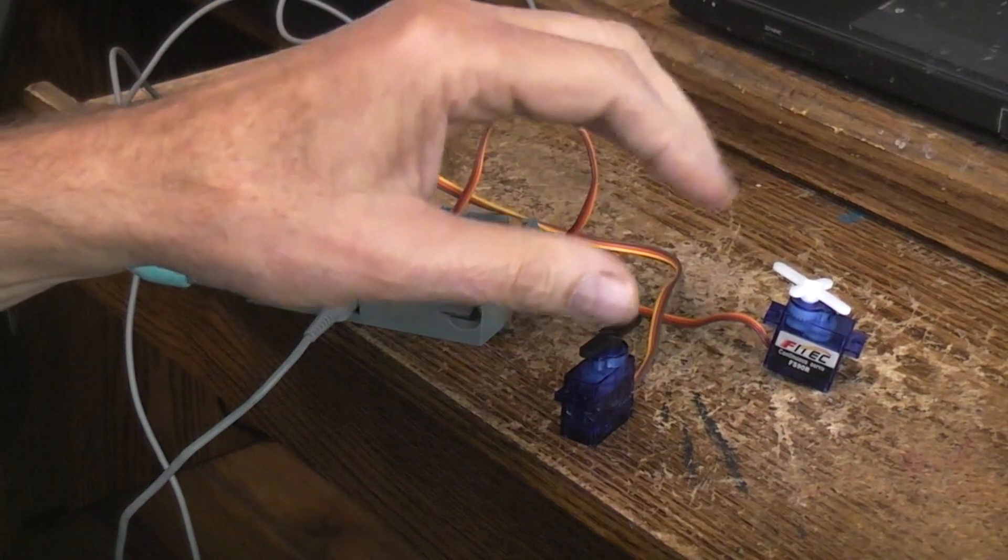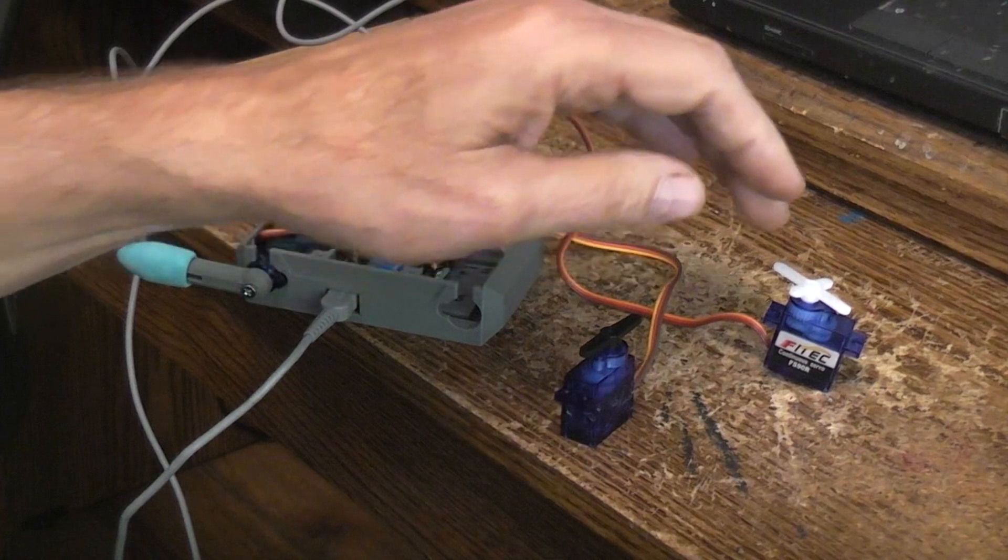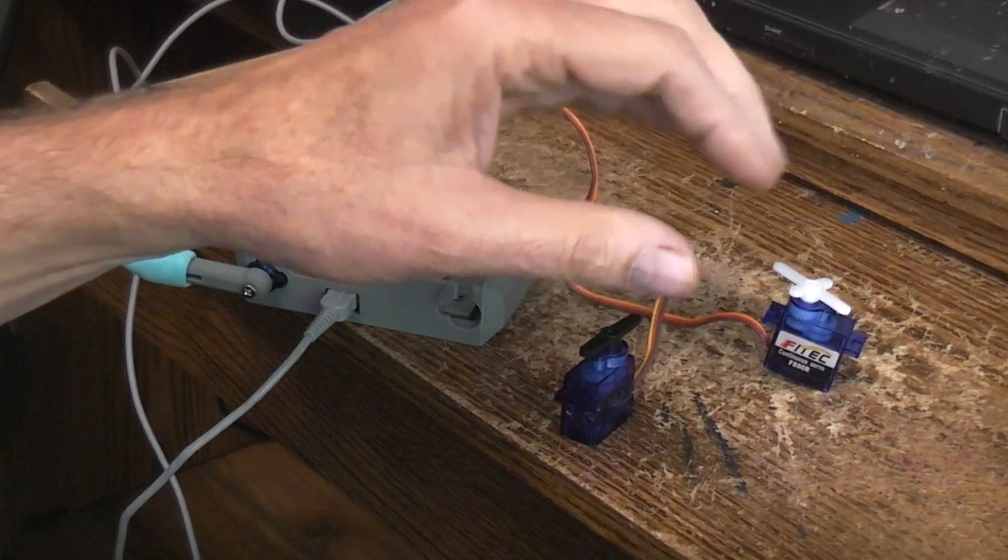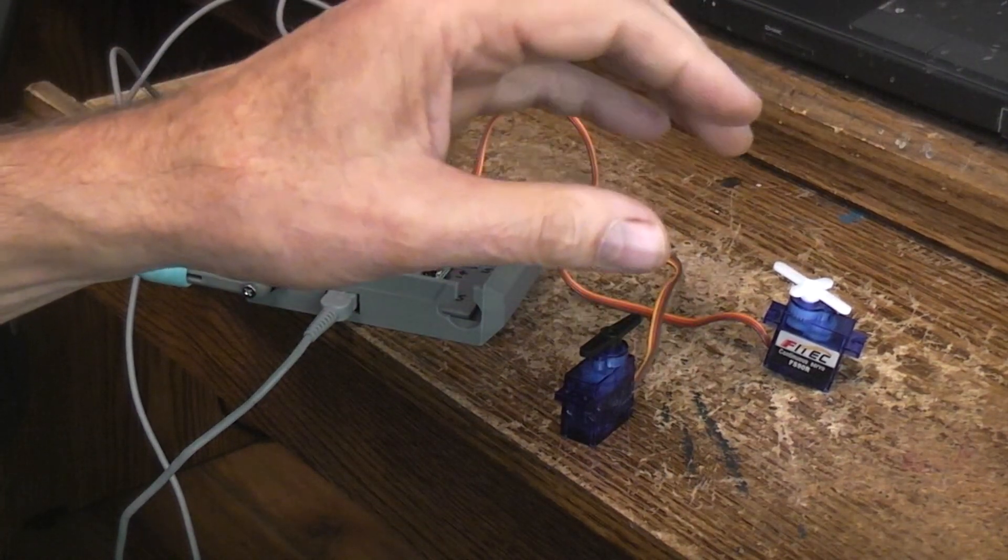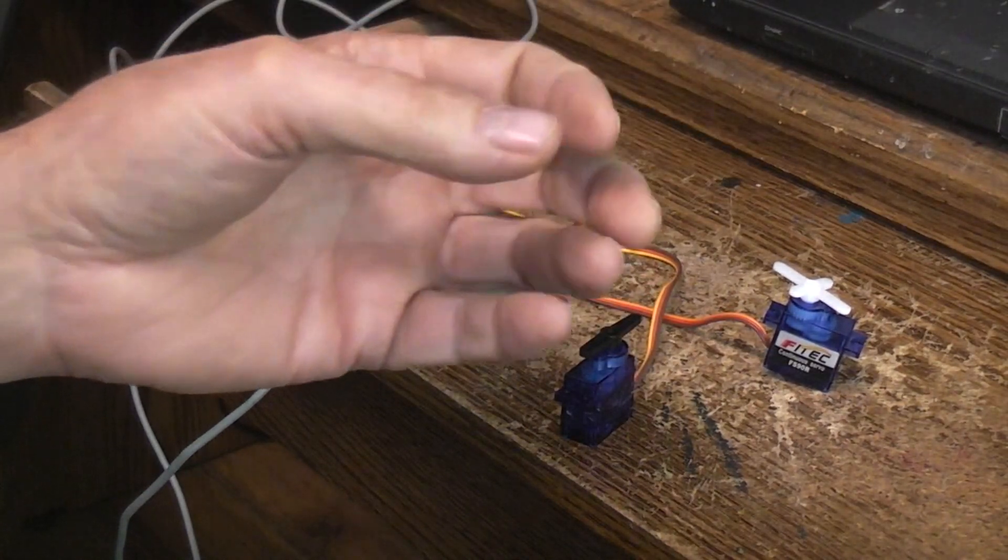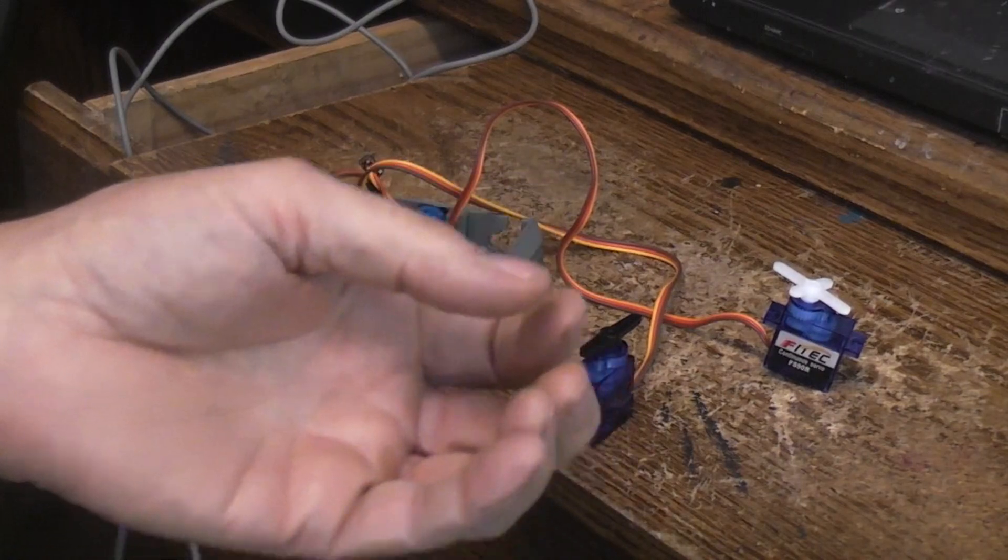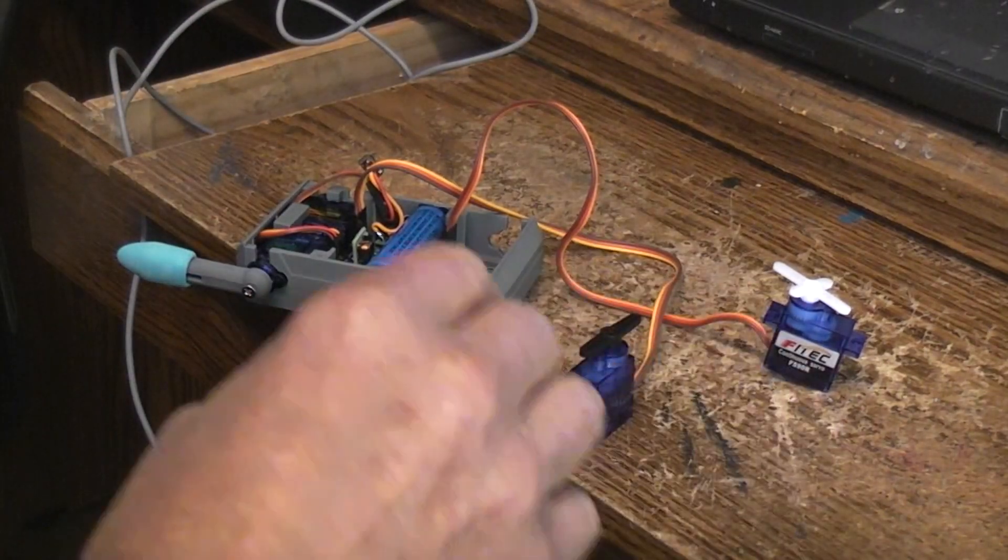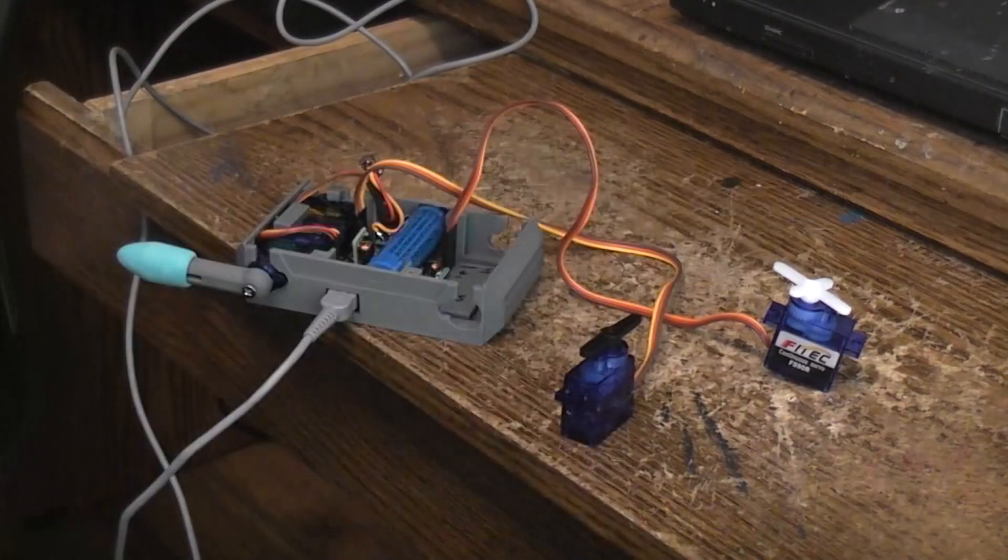Now there are 360 servos that you can tell to go to a particular position because they use a different type of feedback. Either they're going to use a stepper motor and count the steps, or they're going to use an encoder wheel which is basically counting the steps or position of the motor, but not in this particular type.